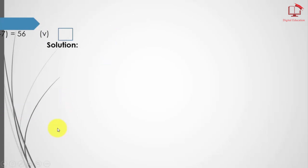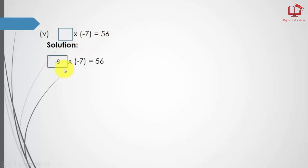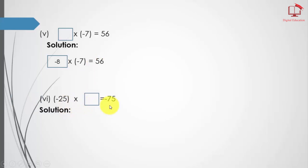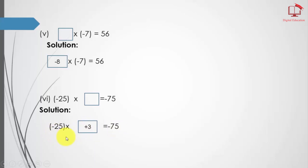Part number 5: empty box multiplied by minus 7 equals 56. If we multiply 8 by 7 we get 56, and minus times minus equals plus. Part number 6: minus 25 multiplied by an empty box equals minus 75. If we fill the box with 3 — since 25 times 3 equals 75 — and plus times minus equals minus.